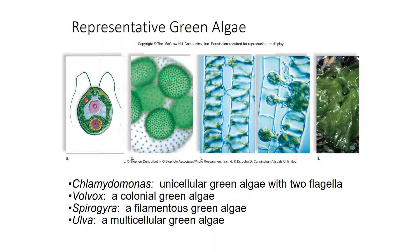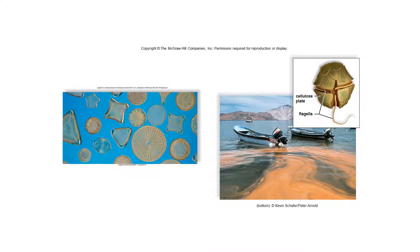Here are some green algae: Chlamydomonas, Volvox, Aspirogyra, and Ulva. On the left are diatoms, and on the right are dinoflagellates. You never want to fish near a red tide or pull up any mussels, oysters, or anything near a red tide. That's what dinoflagellates look like right here.